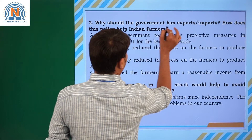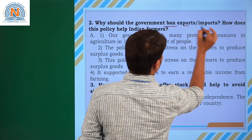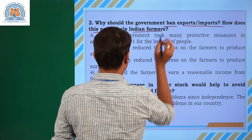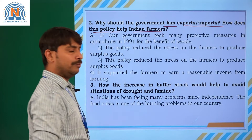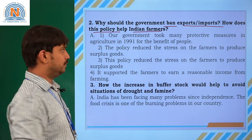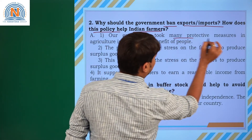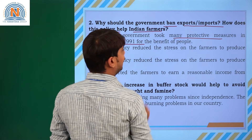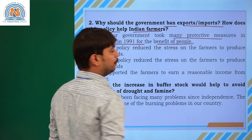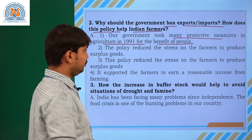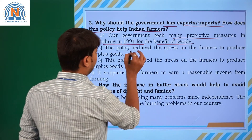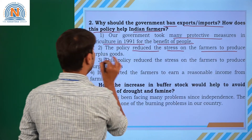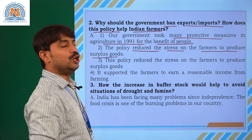Coming to the next question: why should the government ban exports and imports, and how does this policy help Indian farmers? Our government took many protective measures in agriculture in 1991 for the benefit of the people. The policy reduced the stress on farmers to produce surplus goods.